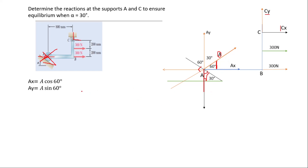Now we are going to find the reactions. We need to get Ax, Ay, Cx, and Cy. To do that, we take a moment at C, because we are asked to find the reactions at A and C. When you create a moment at C, the forces at C will all be zero, so C drops out of the equation.